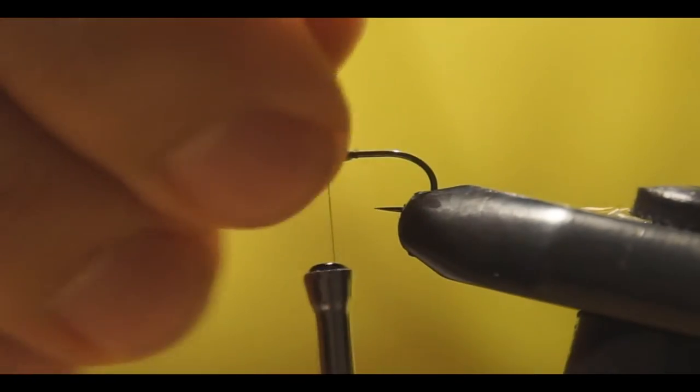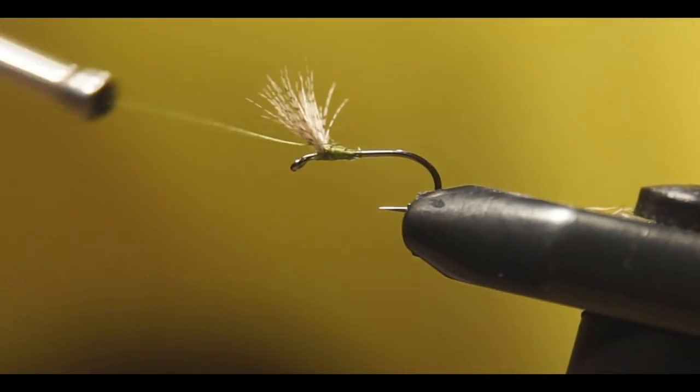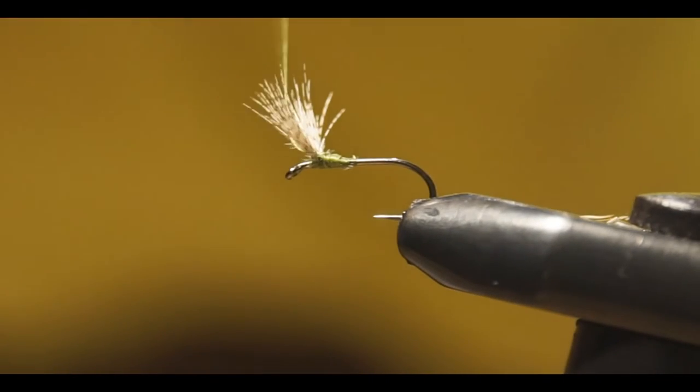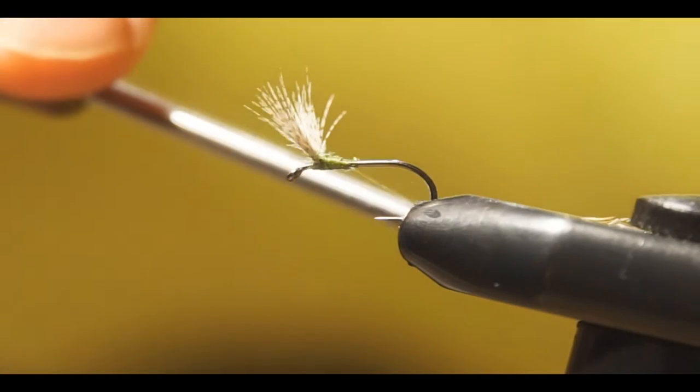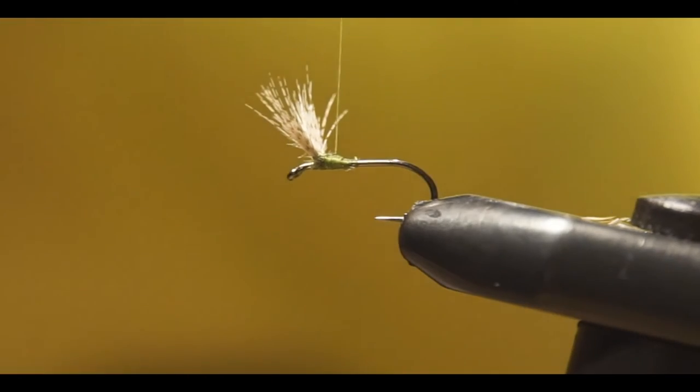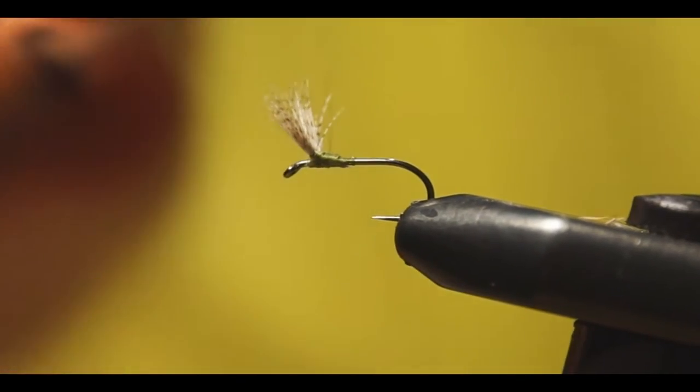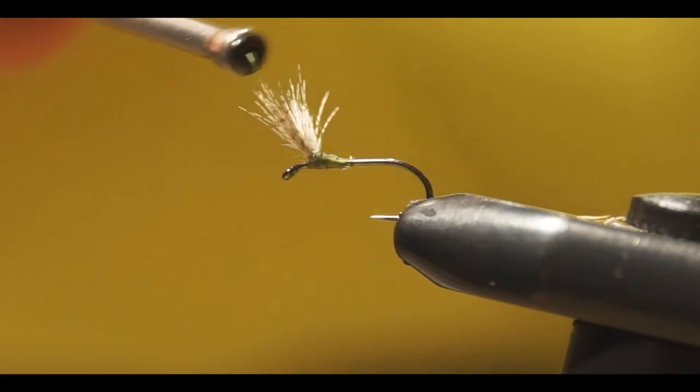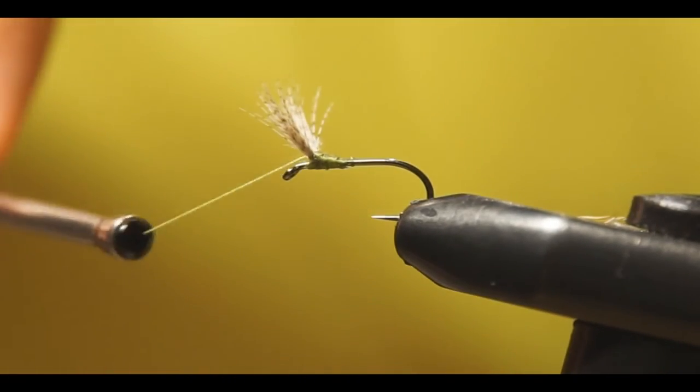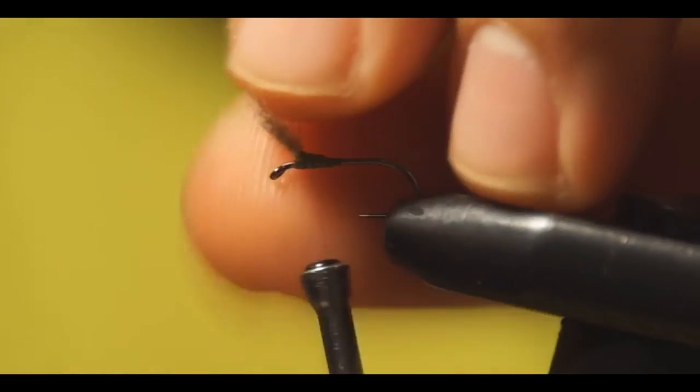Now the most difficult part of this pattern is to make some wraps around the wings to put them together. If the thread isn't working as you want it, try to turn the bobbin around a few times. This will help a lot. At the moment it's quite okay.